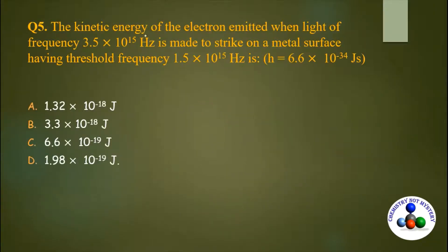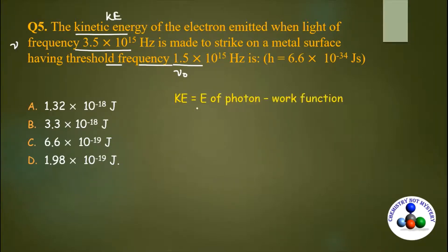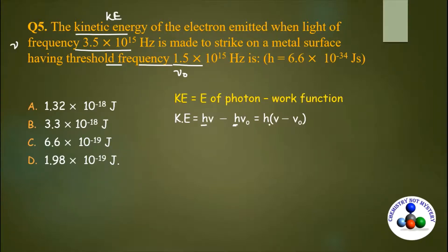Next question: kinetic energy of the electron emitted when light of frequency 3.5 × 10¹⁵ Hz strikes a metal surface having threshold frequency 1.5 × 10¹⁵ Hz is? Frequency of incident light ν = 3.5 × 10¹⁵ Hz and threshold frequency ν₀ = 1.5 × 10¹⁵ Hz are given. Using KE = hν − hν₀ = h(ν − ν₀).